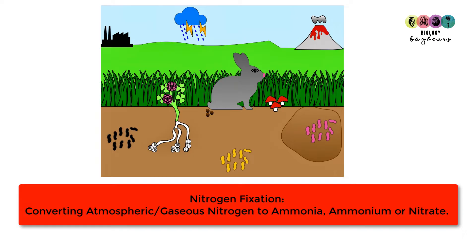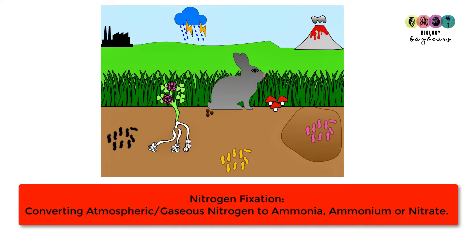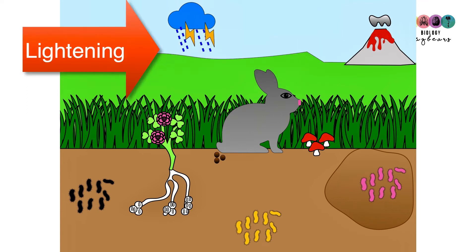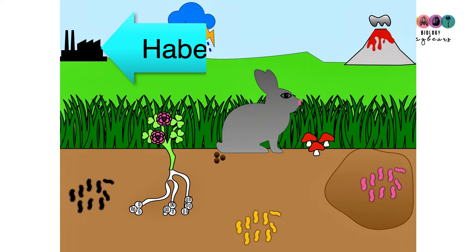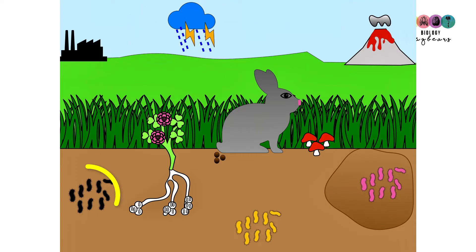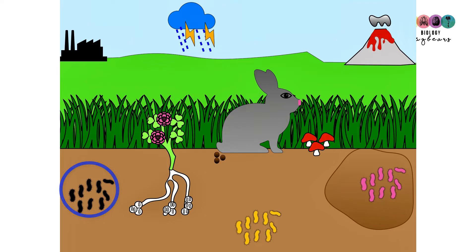How does nitrogen fixation happen in nature? It can happen through the action of volcanoes or by lightning. There is also an industrial process used to manufacture fertilizers called the Haber process. But in nature, we're mostly concerned with the action of bacteria — free-living bacteria that live in the soil. Nitrogen fixation is mostly carried out by these free-living bacteria, which convert atmospheric or gaseous nitrogen into ammonia or ammonium.